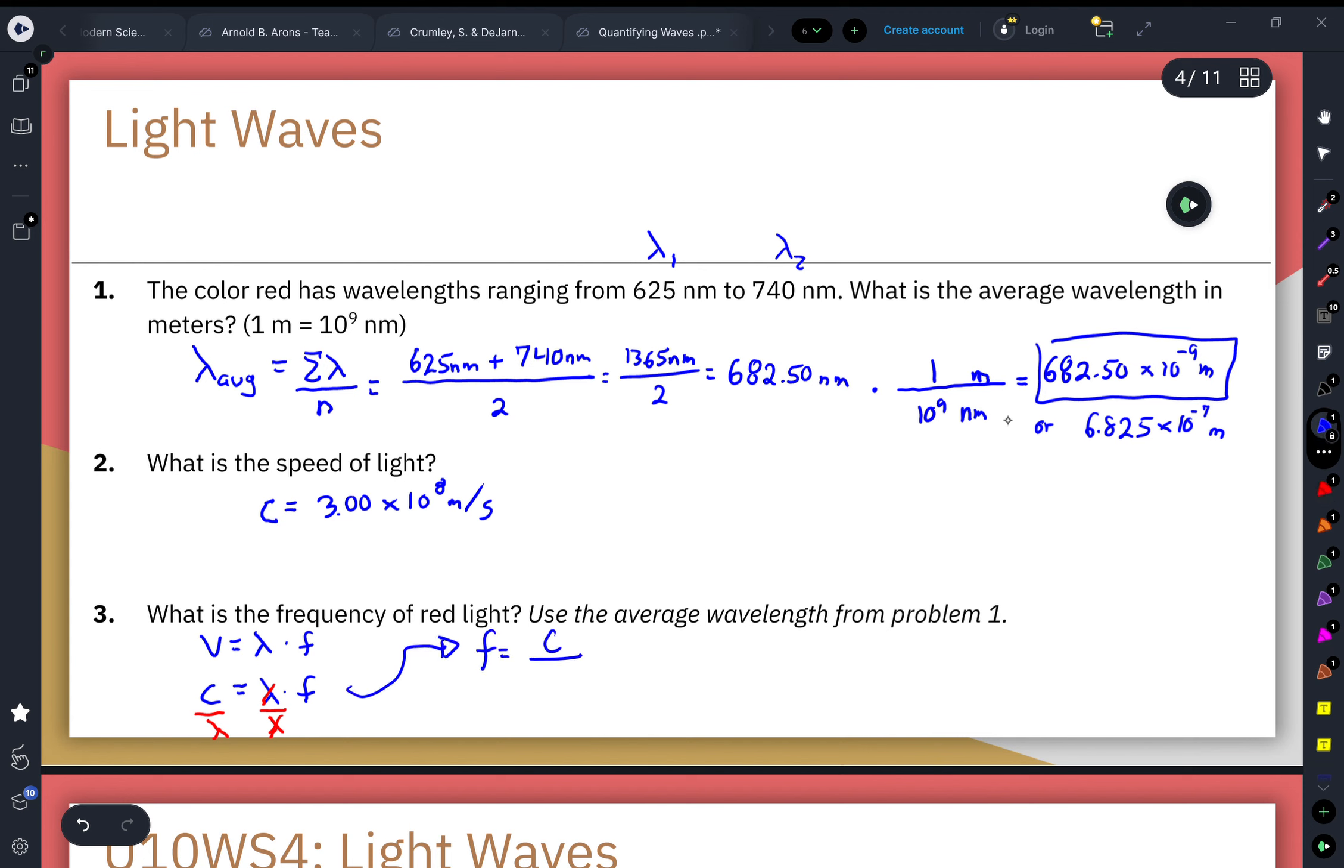The speed of light is 3.00 times 10 to the eighth power meters per second, and our wavelength that we calculated in problem one was 682.50 times 10 to the negative ninth meters. Setting up this way, our meters end up canceling out, leaving us just with our units of one over seconds.